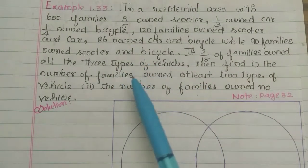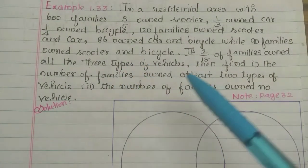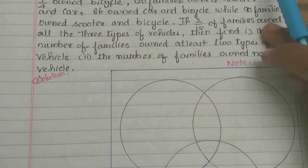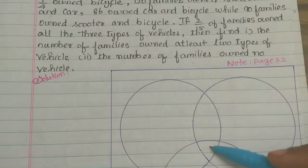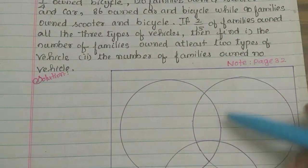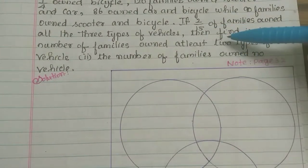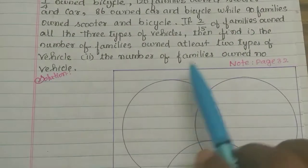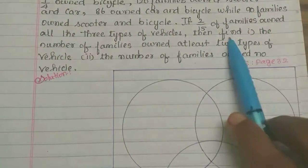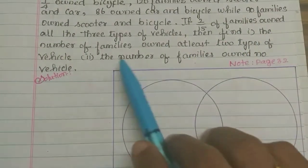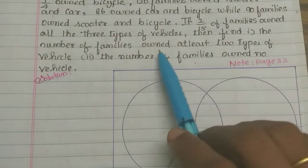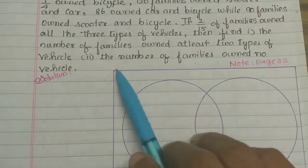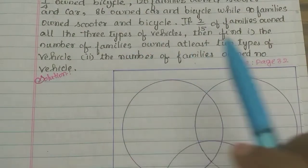All 3 vehicles used — that is the center part of the Venn diagram. 2 by 15 of the 600 families. Then find the number of families that owned at least 2 types of vehicles.